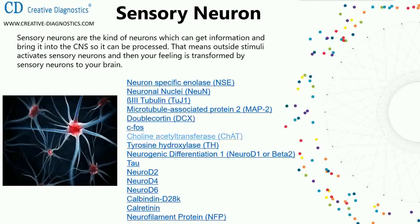Additional sensory neuron markers include choline acetyltransferase (ChAT), tyrosine hydroxylase, neurogenic differentiation 1 (NeuroD1), tau, NeuroD2, NeuroD4, NeuroD6, calbindin-D28K, calretinin, and neurofilament protein.